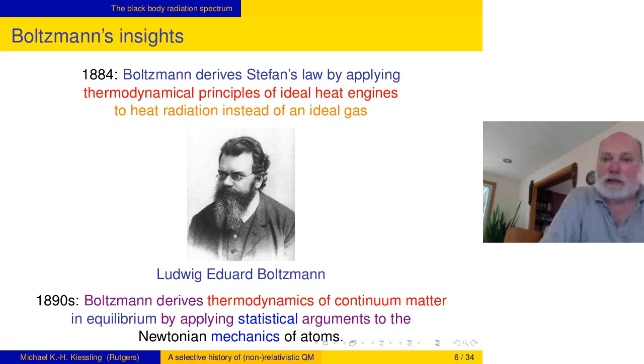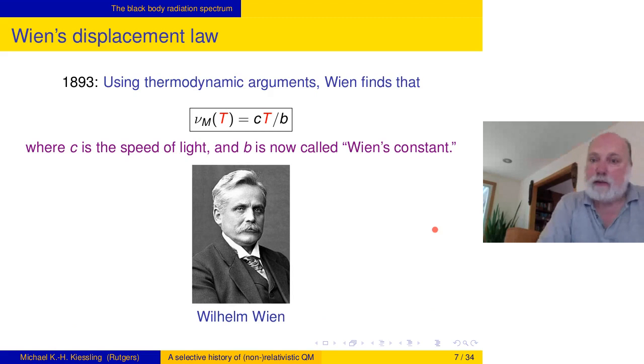This very important person enters the stage, that is 1884, Boltzmann. He derives Stefan's law by applying thermodynamic principle of the ideal heat engines to heat radiation instead of an ideal gas. But also in the 1890s, he works on the statistical mechanics of atoms, and he actually succeeds in deriving the thermodynamics of continual matter in thermal equilibrium. He applies statistical mechanics ideas to Newtonian mechanics of a huge number of tiny atoms, and lays the foundations of equilibrium statistical mechanics.